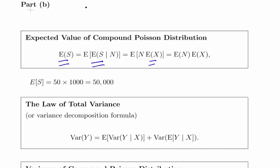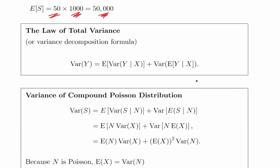This is a useful little result of how to deal with these conditional expectations because we're going to use them with the variance as well. In a nutshell, the expected value of S is the expected value of N, which is 50, times the expected value of X, which is 1,000, so we expect the total expected value of S to be 50,000.